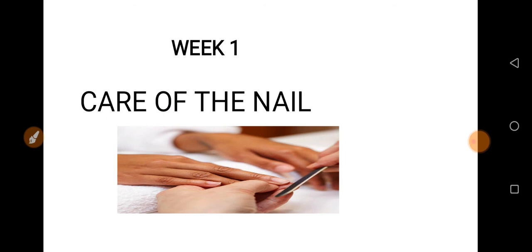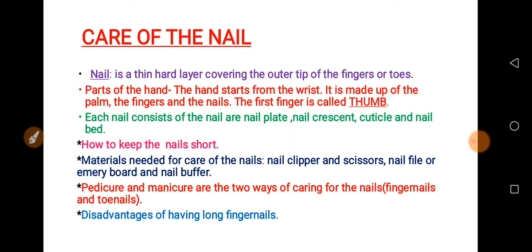Week 1, we discussed about care of the nail. Under the care of the nail, we discussed about what is a nail and the parts of the hand — that the hand starts from the wrist, and is made up of the palm, the fingers, and the nails. The first finger is called the thumb.